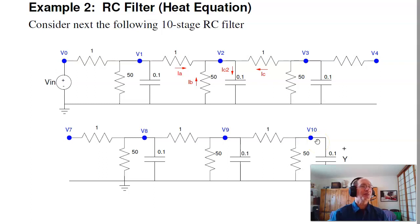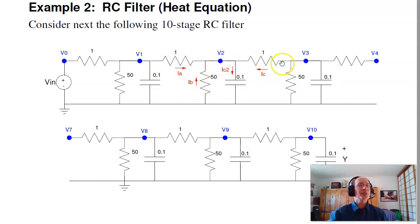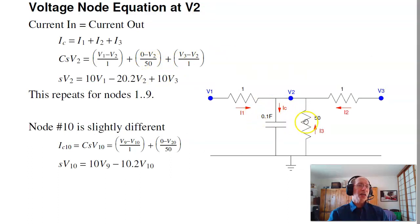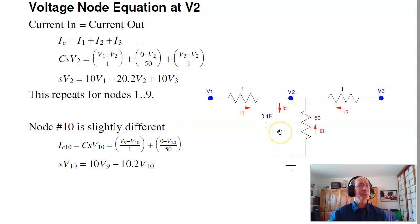To find the transfer function for this 10th-order system, the energy states will be the voltages across the capacitors: V1, V2, V3, and so on. I want to find the current of the capacitor, C·dV/dt. That current, at node 2, is IA plus IB plus IC. At node 2, the current from the left is (V1 minus V2) over 1. Current from the 50-ohm resistor is (0 minus V2) over 50. Current from the right is (V3 minus V2) over 1. Those three add up to become IC, which is C·dV/dt. Since C is 0.1, dividing by 0.1 gives the differential equation. That gets repeated for nodes 1 through 9, just changing the indices.